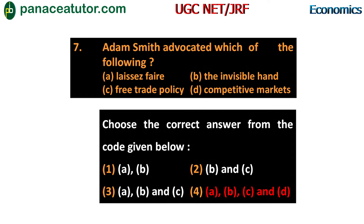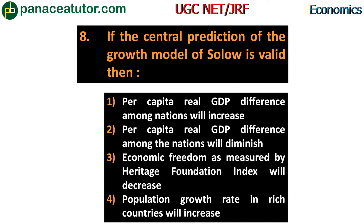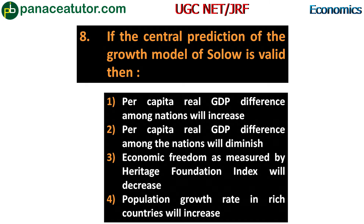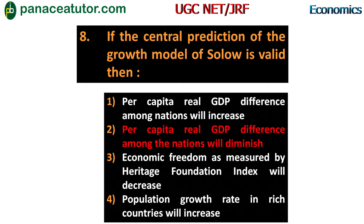Next question: if the central prediction of Solow's growth model is valid, which of the following statements will be true? Option one - per capita real GDP differences among nations will increase; option two - per capita real GDP differences among nations will diminish; option three - economic freedom as measured by the Heritage Foundation index will decrease; option four - population growth rate in rich countries will increase. Solow's model predicts that in the long run, per capita real GDP differences among all nations will diminish. So the answer is option two.